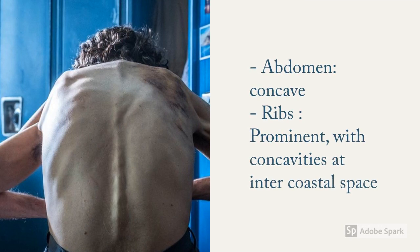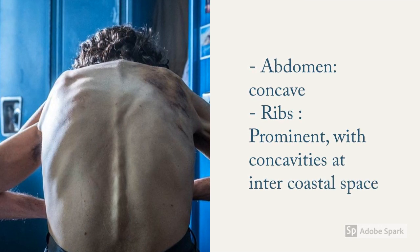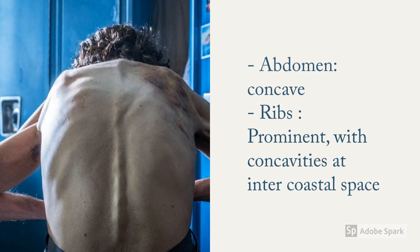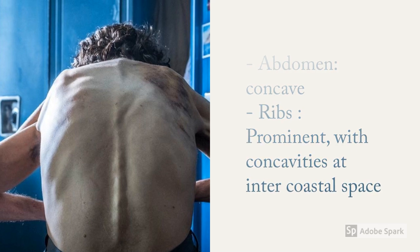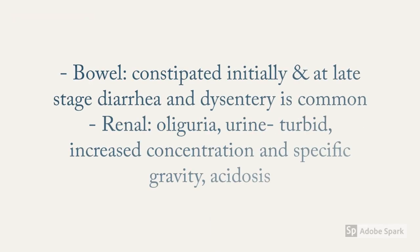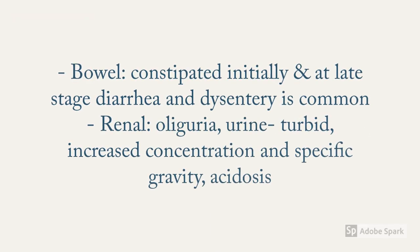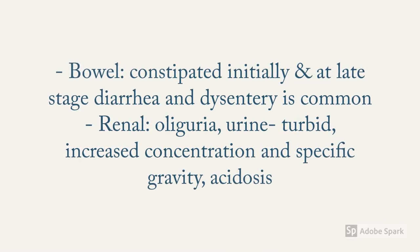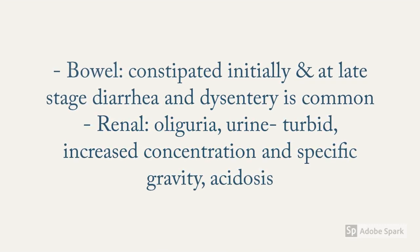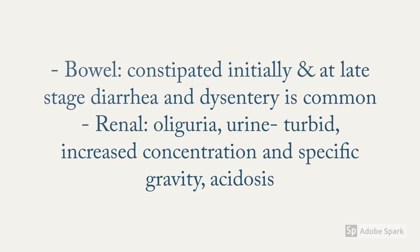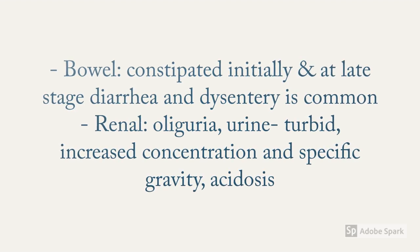The abdomen is concave and the ribs are prominent with concavities at the intercostal space. Initially there is constipation, which is later followed by diarrhea and dysentery. Regarding renal involvement, there is oliguria, turbid urine, and increased concentration or specific gravity of urine.